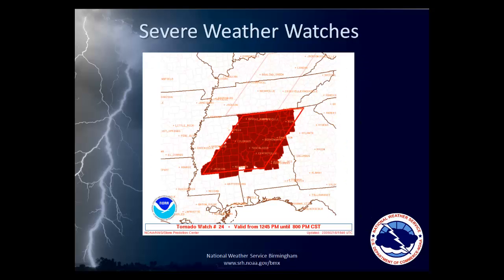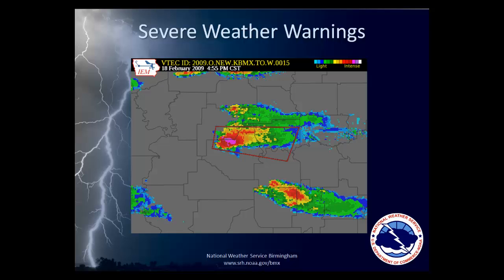A tornado watch is issued when conditions are favorable for the formation of severe thunderstorms that may produce tornadoes within the next several hours. In central Alabama, an average of 8 to 13 tornado watches are issued each year. Tornado warnings are issued when a tornado is sighted by storm spotters, or when certain features and patterns on radar suggest that a tornado is or soon will be forming. Due to certain geographic limitations, National Weather Service Doppler radars only detect storm rotation. The rotation associated with a tornado within a storm is typically too small to see with our current radar system, the WSR-88D.